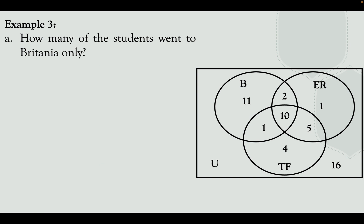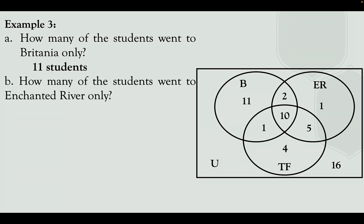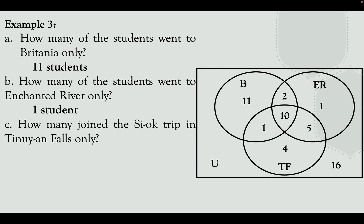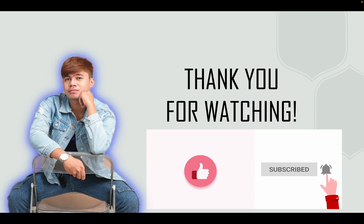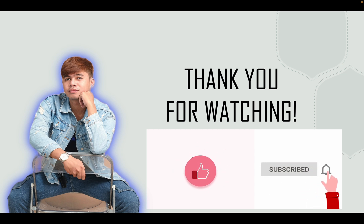So the final answers are: 11 students went to Britannia only, 1 student went to Enchanted River only, 4 students went to Tinuy-an Falls only, and 16 students did not go to any of the tourist spots. Thank you so much for watching. I hope that you've learned something from this lesson. Please don't forget to like, subscribe, and share it with your friends. Thank you so much everyone. Goodbye.